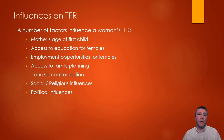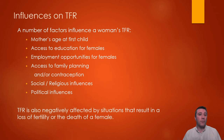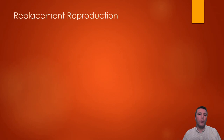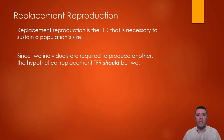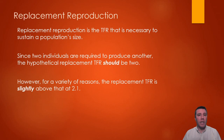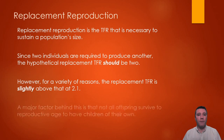In circumstances that lead to either the death or infertility of a female who hasn't reached or is still in her childbearing years, total fertility rate decreases. Replacement reproduction is the concept around the total fertility rate necessary to maintain a population size. Since it takes two individuals to create a child, the hypothetical replacement fertility rate should be two — two parents produce two children, the parents eventually die, and the two children replace them. But in reality, the actual replacement TFR is currently 2.1, and a major factor behind this is infant or child mortality.